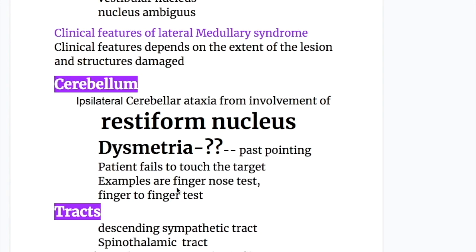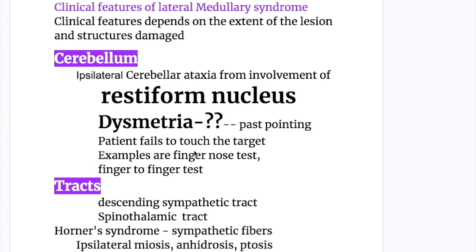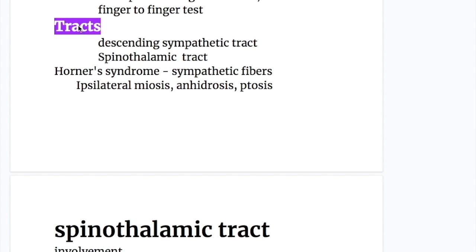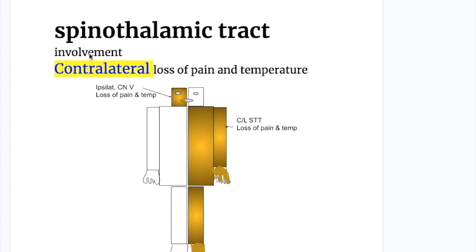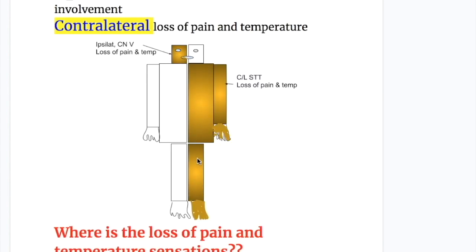What are the clinical features of lateral medullary syndrome? Ipsilateral cerebellar ataxia from involvement of the restiform body, with dysmetria — past pointing, where the patient fails to touch the target — as in the finger-nose and finger-to-finger tests. The descending sympathetic tract is involved: its interruption causes Horner syndrome, with the triad of ipsilateral miosis, anhidrosis, and ptosis. The spinothalamic tract is also involved, causing contralateral loss of pain and temperature on the body surface, shown here in brown.